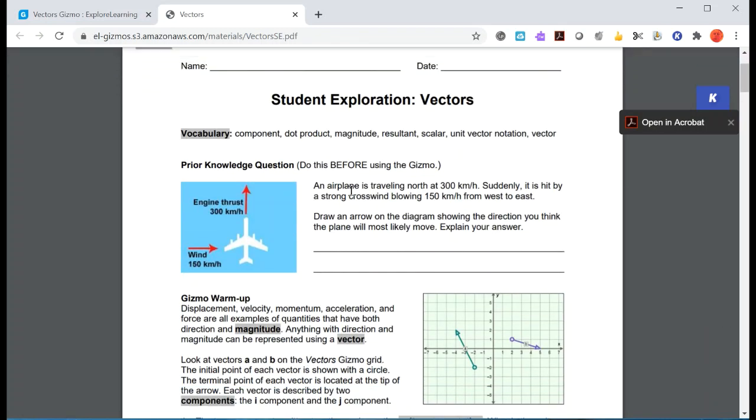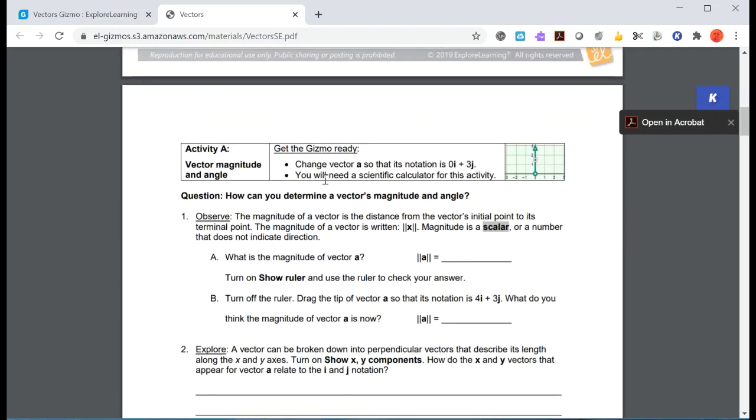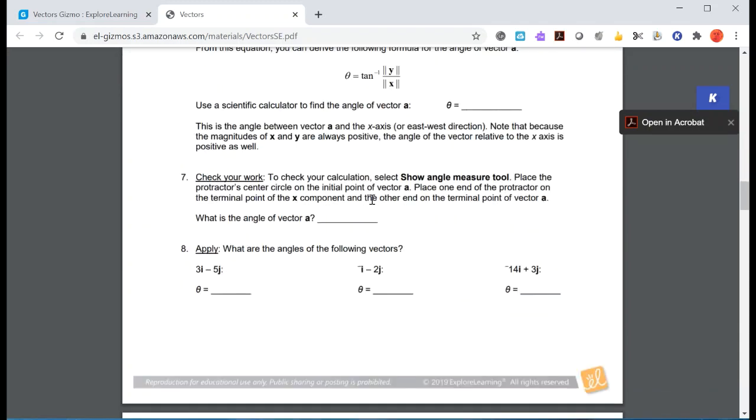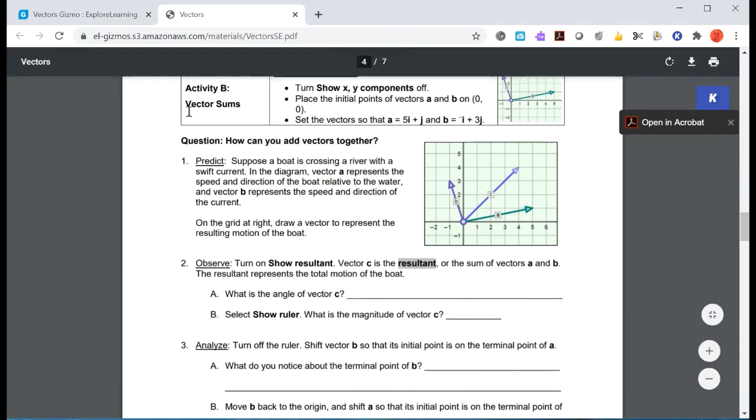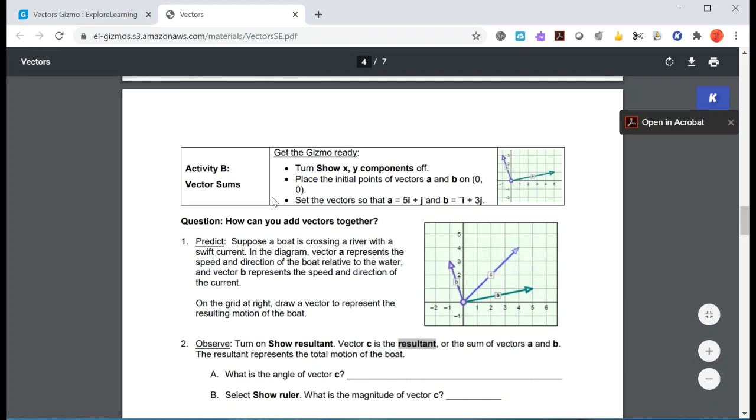For this particular one, we're going to be doing Activity A: Vector Magnitude and Angle. We'll go down a little bit more and for Vector B we'll do Activity B for Vector Sums.